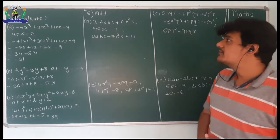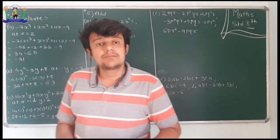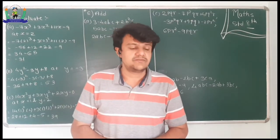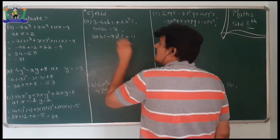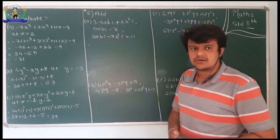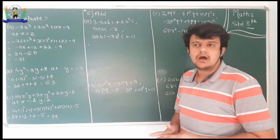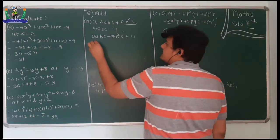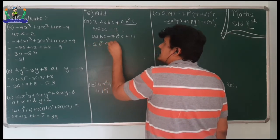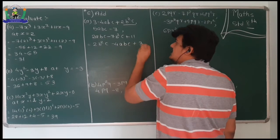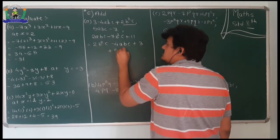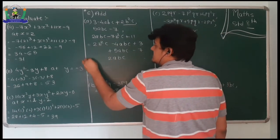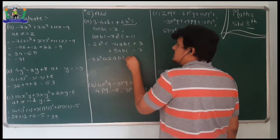Moving ahead with addition of algebraic expressions. Remember, only like terms can be added or subtracted. We can work vertically or horizontally, but we'll use the vertical method here. First expression: 2b²c minus 4abc plus 3. Then we have plus 5abc minus 7b²c, and then plus 11.